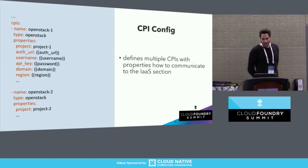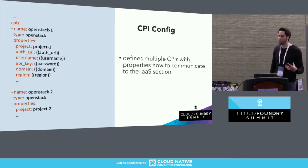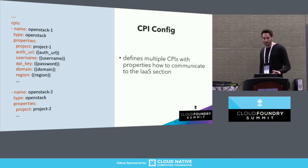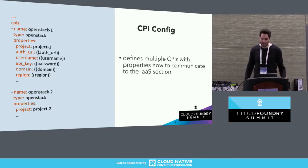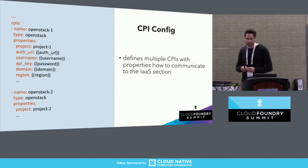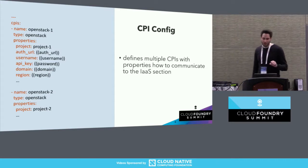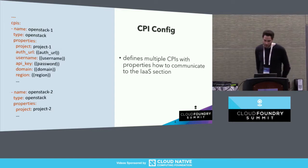The CPI config defines multiple CPIs with properties for how to communicate to a given infrastructure section — something like an AWS account, an OpenStack tenant, or a vSphere data center. In most cases, a single CPI and single infrastructure section is sufficient. However, in production it might make sense to use multiple infrastructure sections and therefore multiple CPIs for availability, isolation, or scalability reasons. Multi-CPI is totally optional.